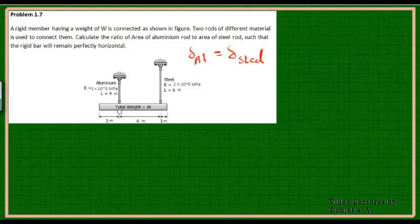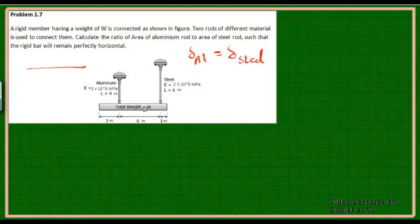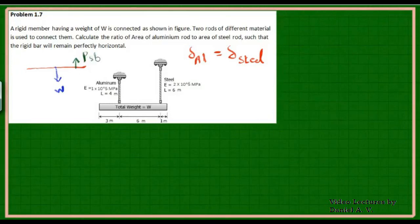We need to determine what proportion of the weight goes to each of the two members, so we can calculate the deformation. The weight W of the platform acts through its center of gravity (CG), which is at the center of the member. Apart from this, there will be reactions: one in the steel rod, P_steel, and another in the aluminium rod, P_aluminium.